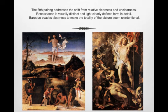The fifth and final pairing addresses the shift from relative clearness to unclearness. Renaissance is usually distinct, and light clearly defines form in detail. The Baroque evades clearness to make the totality of the picture seem almost unintentional. In the painting with absolute clarity, objects tend to be placed in strong, clear light so their edges are crisp and the viewer has an immediate understanding of the form of the object. Relative clarity, as seen on the right, has to do with the optical sensation of objects — they generally tend to be darker and more loosely focused.